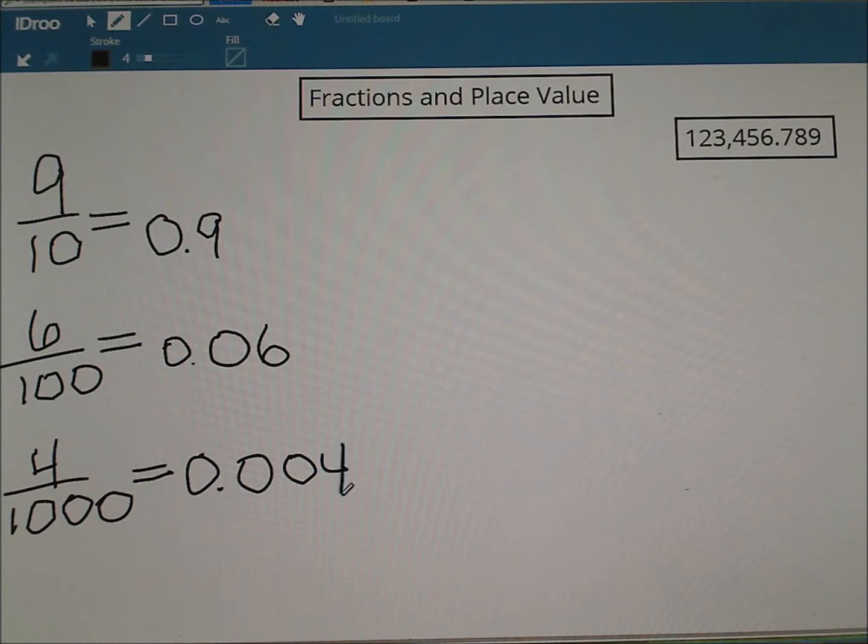Let's look at one more example: twelve hundredths. Notice now we have a two-digit value in our numerator. So how is that written? The thing you want to be sure of is you know your placement. We're going to be in the hundredths place, and the last digit of this value should be written in the hundredths place.